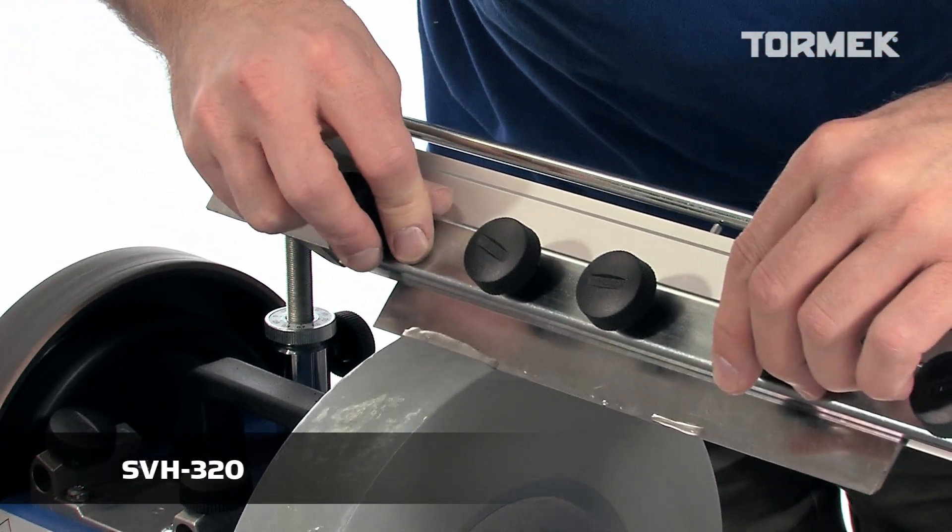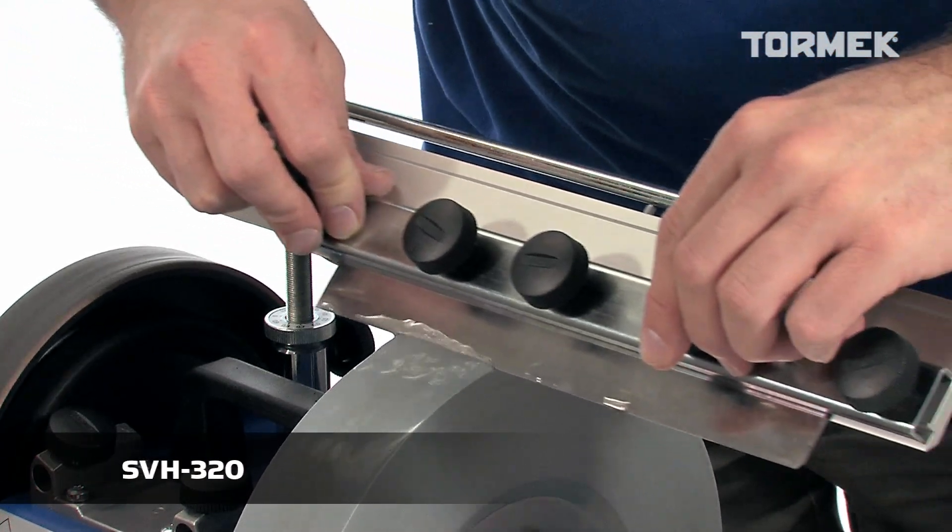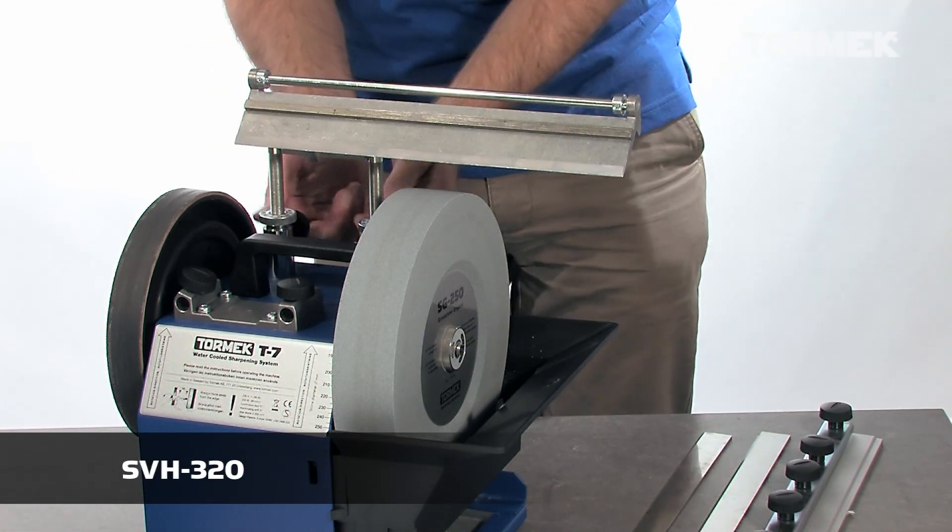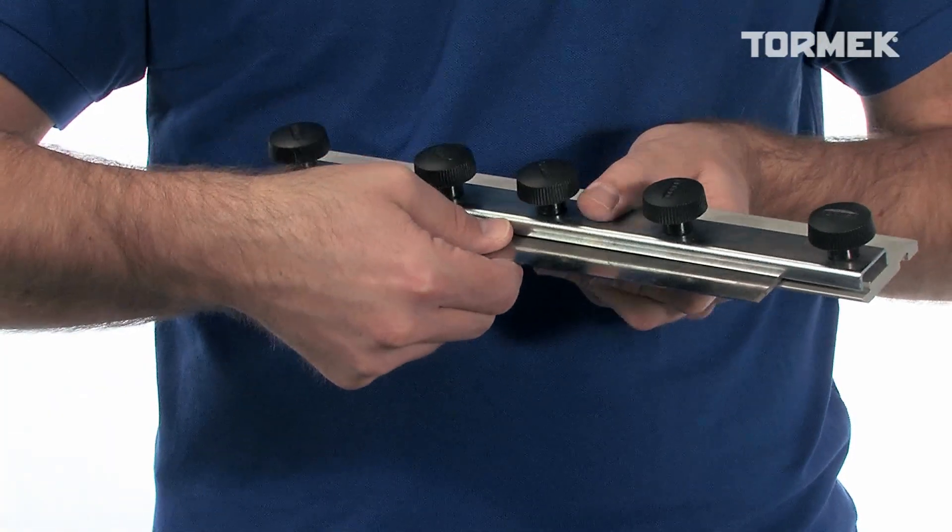With SVH 320, you can easily sharpen your planar blades yourself. The jig comprises a support and a holder where the blade is mounted.